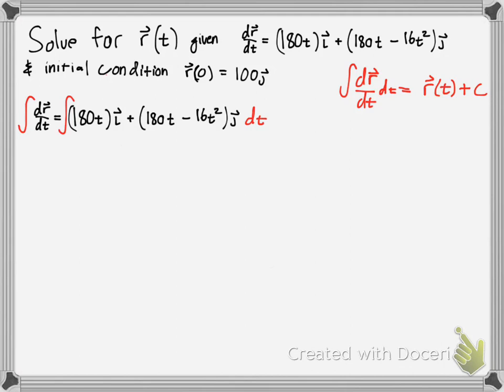The antiderivative of 80t would be 80t squared over 2, which is 40t squared. That's the i component, now we've got to do the j component. Same thing, we've got 90t squared, so 16t cubed over 3.